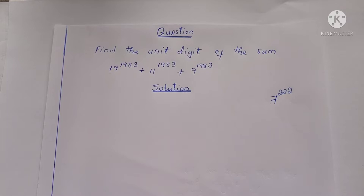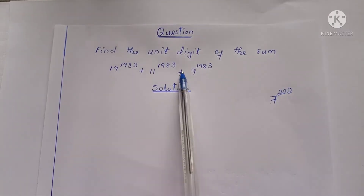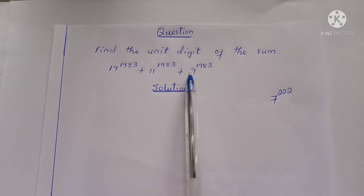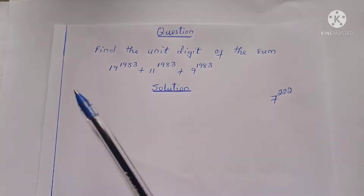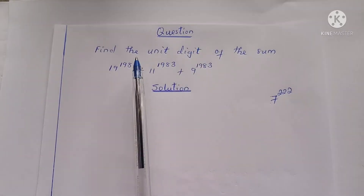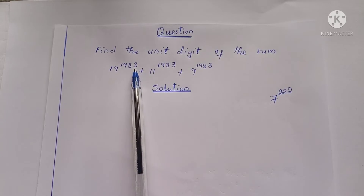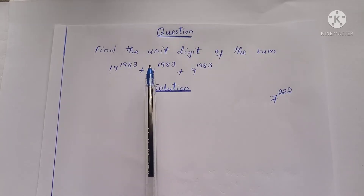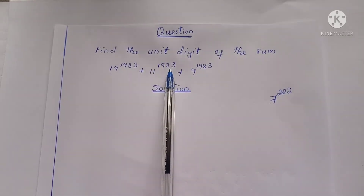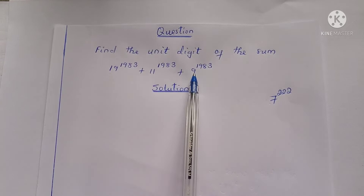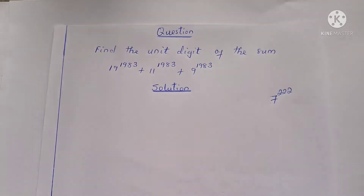In today's presentation, we are going to find the unit digit of the sum: 19 raised to the power 1,983 plus 11 raised to the power 1,983 plus 9 raised to the power 1,983.